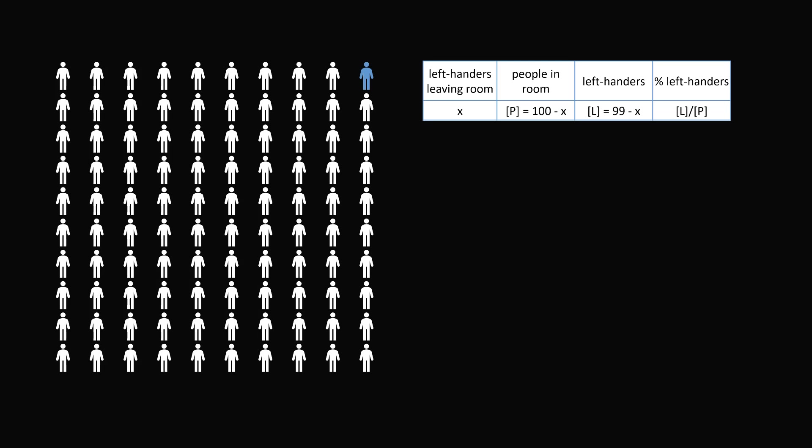So we start out where we just have zero left-handers leaving the room. We have 100 people in the room and 99 of them are left-handers, which means we have 99%.